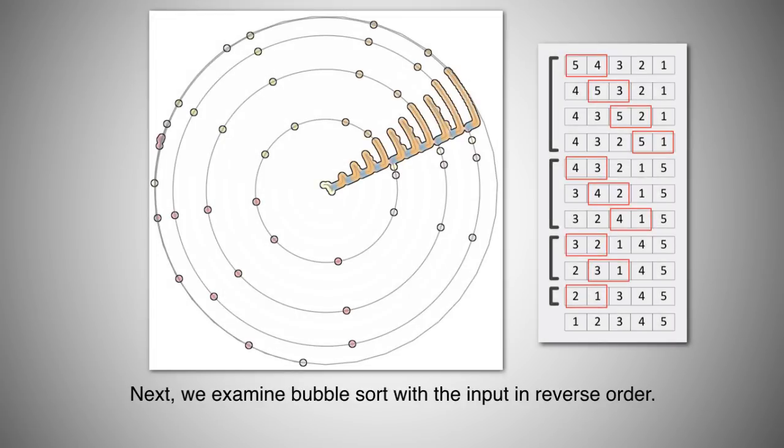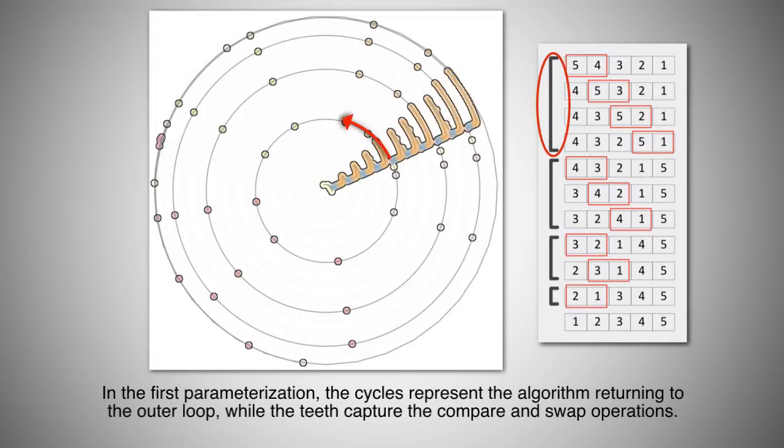Next, we examine bubble sort with the input in reverse order. In the first parameterization, the cycles represent the algorithm returning to the outer loop, while the teeth capture the compare and swap operations.